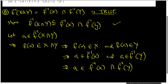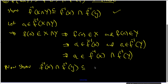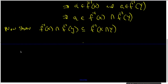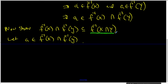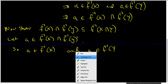Now we need to show the other inclusion: that the pre-image of X intersected with the pre-image of Y is a subset of the pre-image of X∩Y. Again, I'll start by picking an arbitrary element 'a' inside the set I want to show as a subset. This says a is part of the pre-image of X and a is also part of the pre-image of Y.